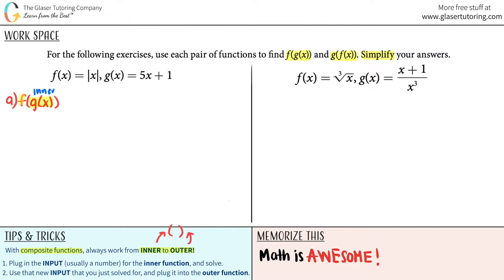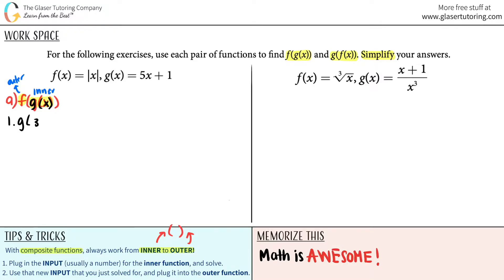My outer function is the f function. So working from inner to outer: for step one you plug in the input into the inner function. The inner function was g of x, and normally it would be like g of 2 or g of 3, but in this case it's just g of x. So I literally copy this: g of x is 5x plus 1.